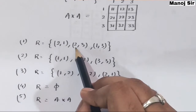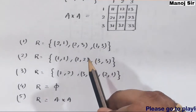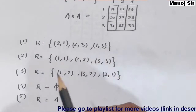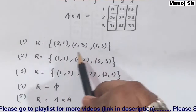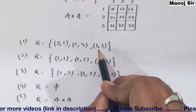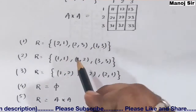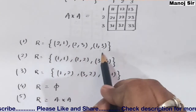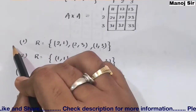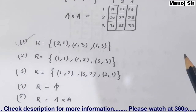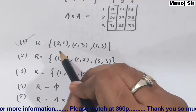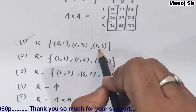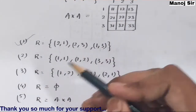First example: R = {(2,1), (2,3), (1,3)}. The symmetric pair of (2,1) is (1,2) — not present. The symmetric pair of (2,3) is (3,2) — not present. The symmetric pair of (1,3) is (3,1) — not present. No diagonal elements present either. So this relation is asymmetric.